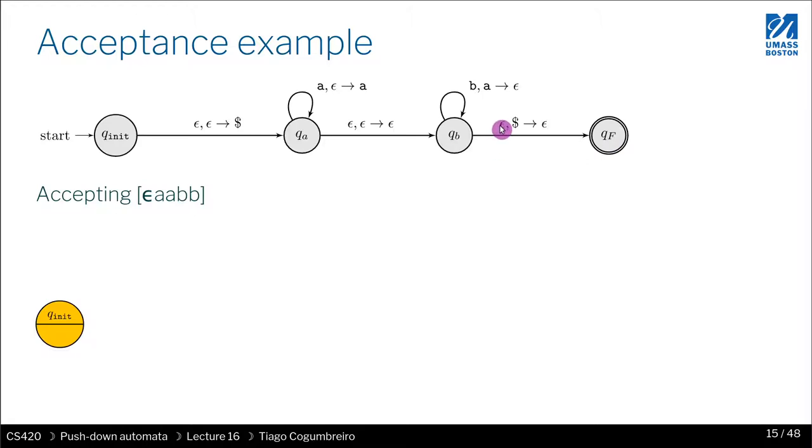Can we go to QF? We can consume an epsilon, so that's fine. What we have on the stack at this point, saying that we need to pop dollar sign. But if we reach it from here, then the dollar sign would be on the stack, which means we can also reach QF. So just by doing epsilon, all of these four states are reachable.